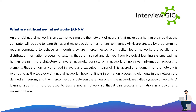What are artificial neural networks? An artificial neural network is an attempt to simulate the network of neurons that make up a human brain, so that the computer will be able to learn things and make decisions in a human-like manner. ANNs are created by programming regular computers to behave as though they are interconnected brain cells. The architecture of neural networks consists of a network of non-linear information processing elements arranged in layers and executed in parallel — a topology. These elements are defined as neurons, and the interconnections between neurons are called synapses or weights. A learning algorithm must be used to train a neural network so that it can process information in a useful and meaningful way.